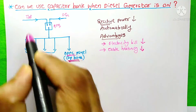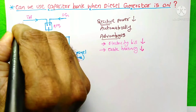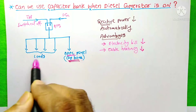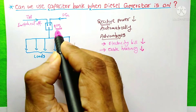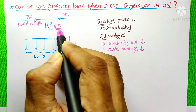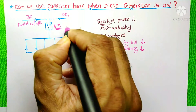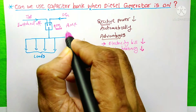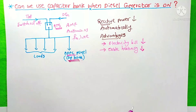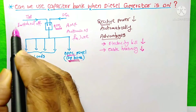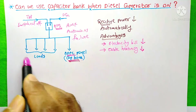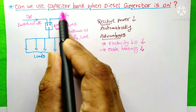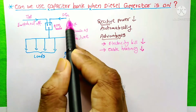Suppose this transformer is switched off and at this time we need power to this panel. The ATS — the automatic transfer switch — is associated with the AMF relay, that is the auto mains failure relay. Whenever this transformer is switched off, the AMF relay will send a signal to the DG and the DG will turn on automatically.